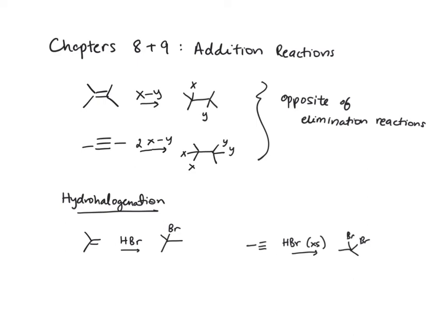Today's video focuses on chapters 8 and 9, which cover addition reactions. Addition reactions are the opposite of elimination reactions. They involve alkenes and alkynes where something XY is added across a pi bond to give new sigma bonds, and that XY can be two different things or the same thing.